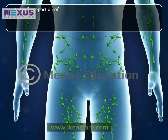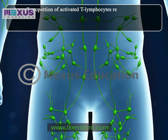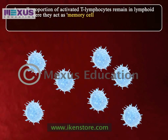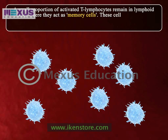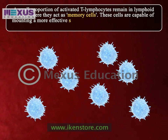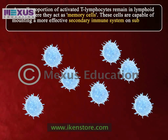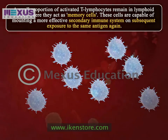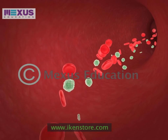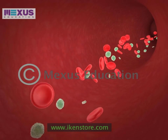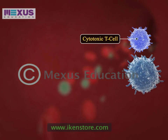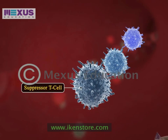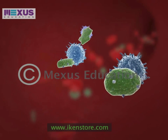A small proportion of activated T lymphocytes remain in lymphoid tissues where they act as memory cells. These cells are capable of mounting a more effective secondary immune response on subsequent exposure to the same antigen. Thus, the three types of activated T lymphocytes — cytotoxic cells, helper cells, and suppressor cells — are responsible for the cellular immune system of the body.